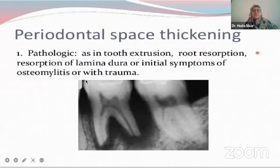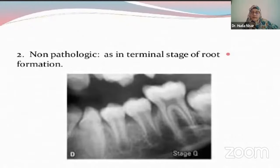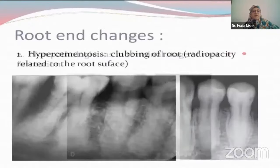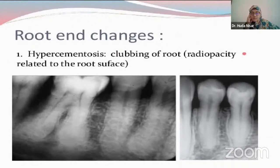Resorption of lamina dura occurs when the tooth is deceased — that is, there are caries, periodontitis, initial symptoms of osteomyelitis, or trauma, which can also depict thickening of the periodontal space. The non-pathologic form could be observed during developmental stages of dentition, such as in the mixed period in the initial primary dentition phase, where you will not be able to appreciate a periodontal space because the periodontal fibers are not yet formed. Then we have root end changes, specifically hypercementosis, which might be commonly observed. It is basically observed in aged patients and also in patients who have bruxism problems, or in teeth which are not physiologically used.